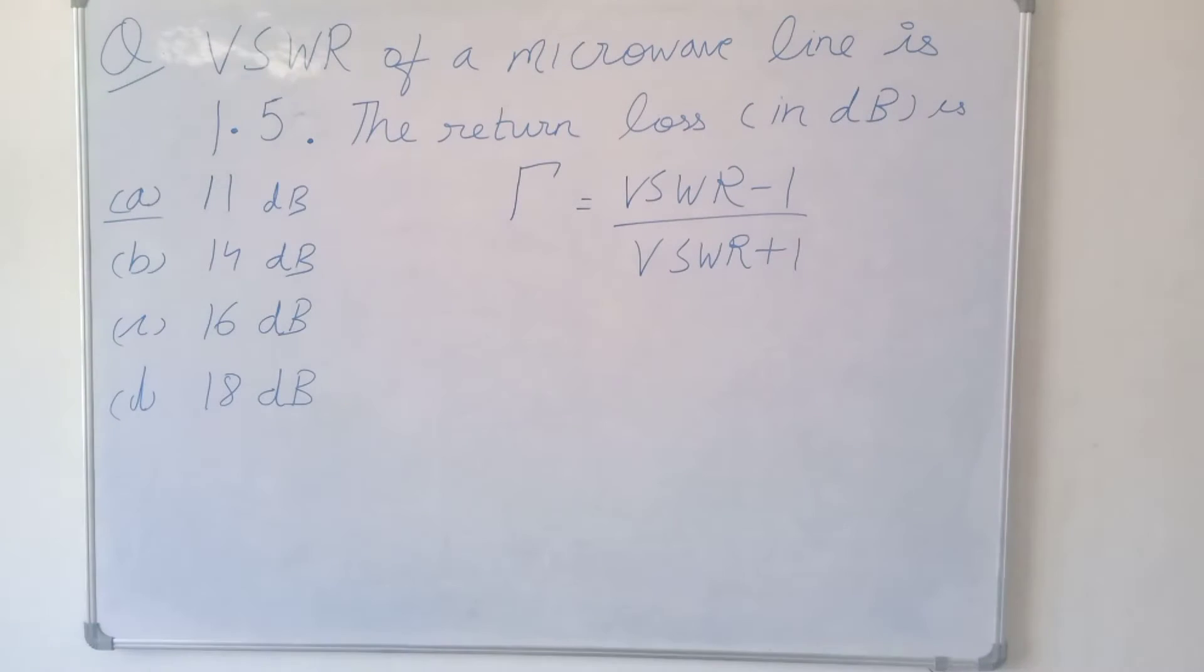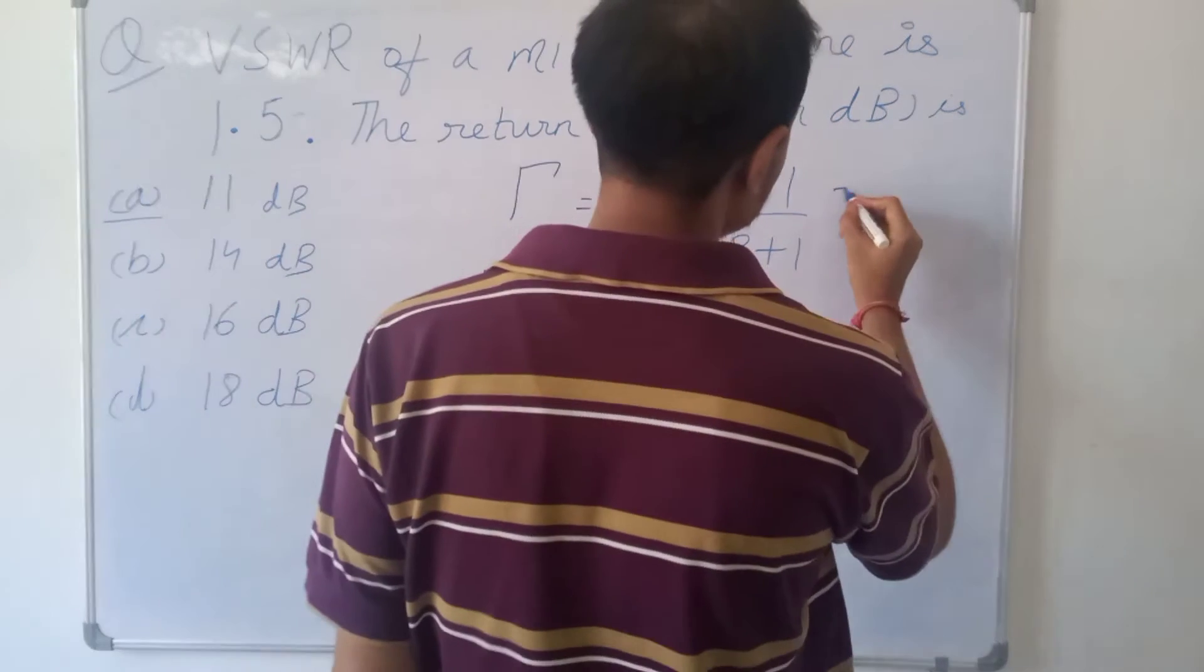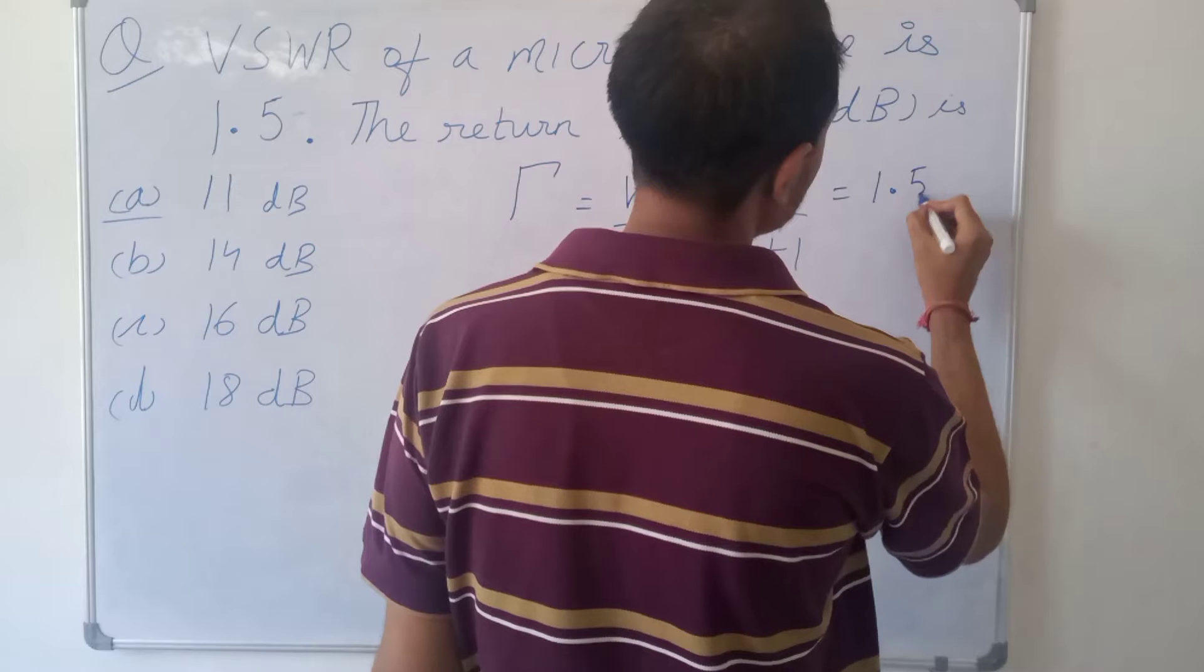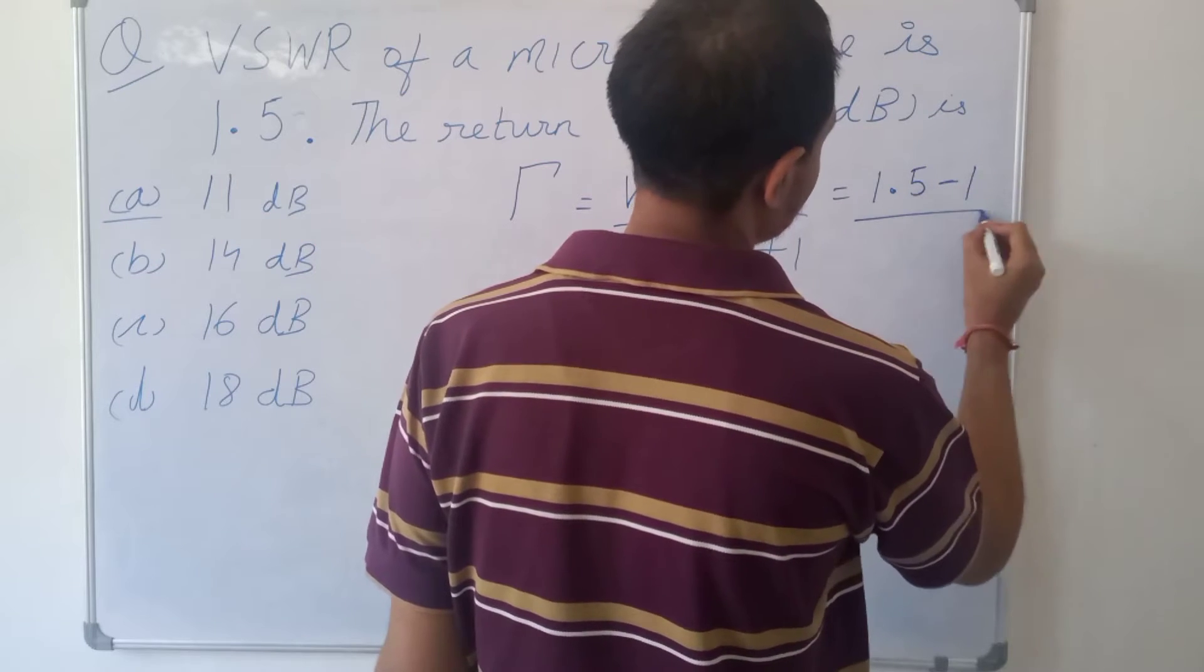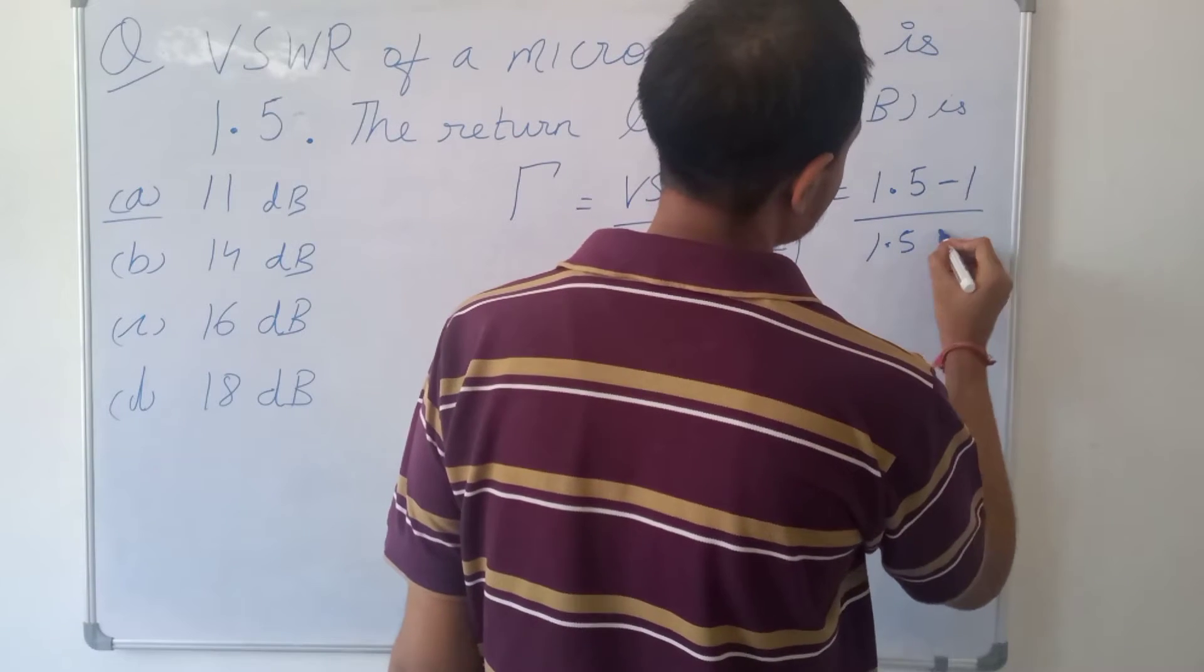You can calculate tau very easily. The value of tau will be 1.5 minus 1 over 1.5 plus 1.